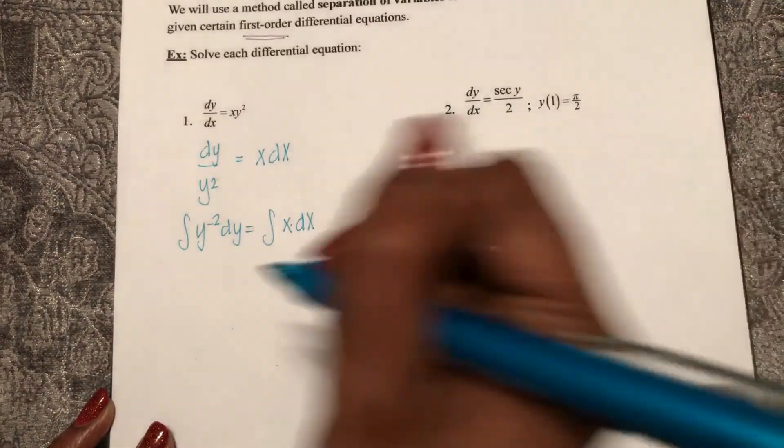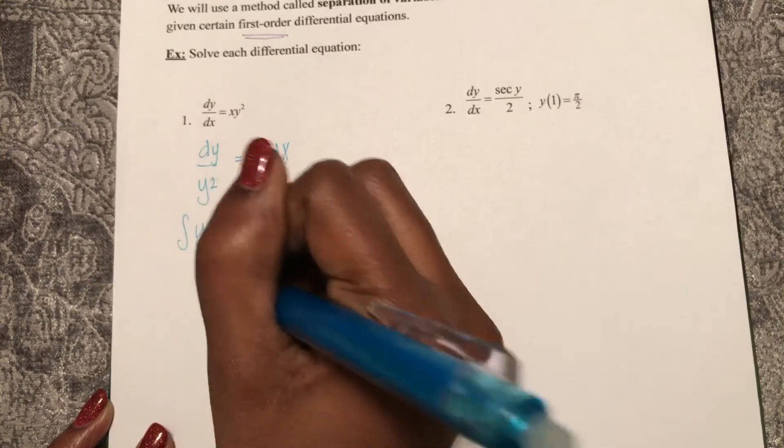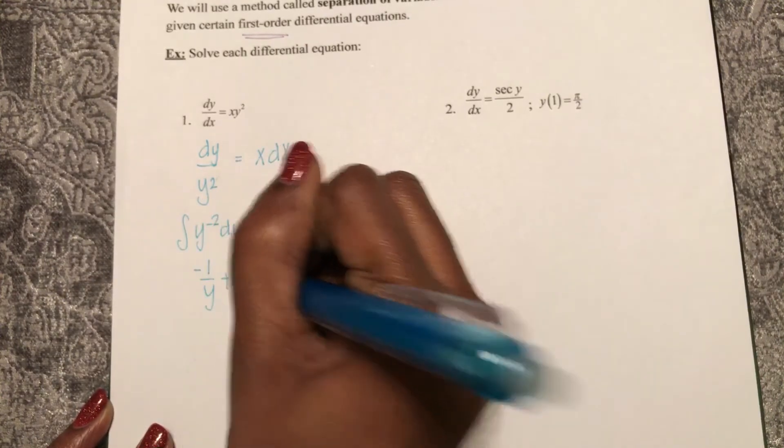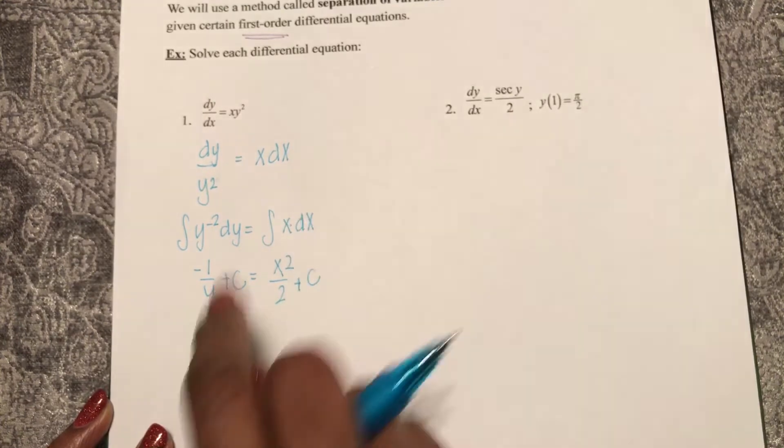Well, the integral of y to the negative 2 is negative 1 over y plus c equals x squared over 2 plus c.